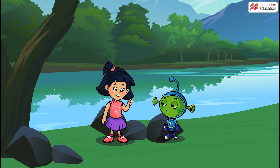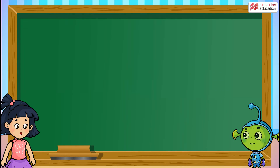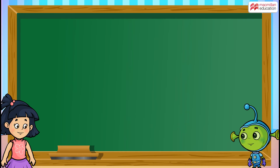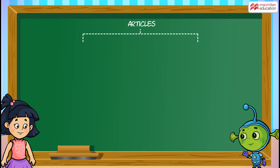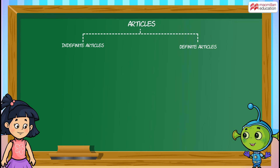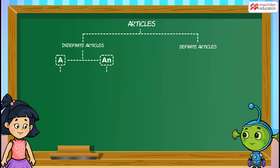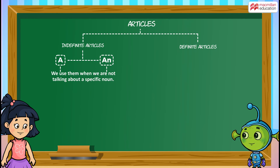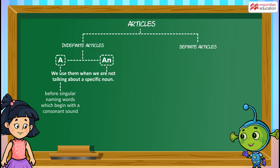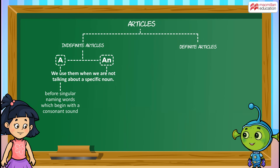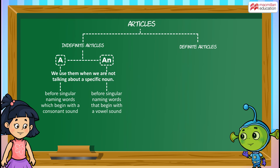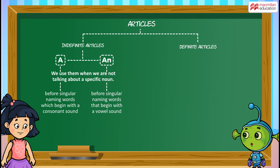Now you will get the hang of how to use articles. Today I learned that articles are of two types: indefinite and definite articles. A and AN are indefinite articles. We use them when we are not talking about a specific noun. A is used before singular naming words which begin with a consonant sound. AN is used before singular naming words that begin with a vowel sound.